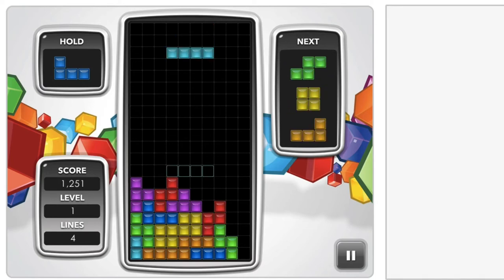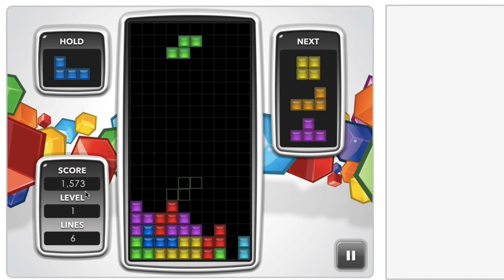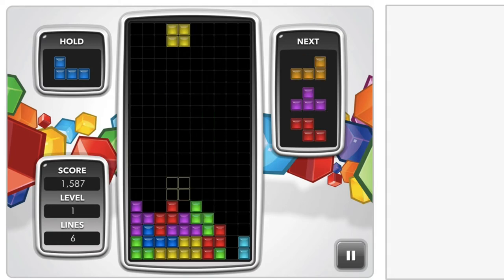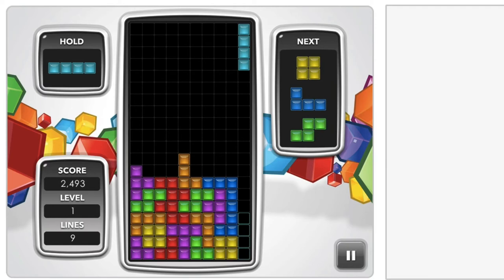When you get rid of one or two lines for example, your score is less. As you can see here, you only have like 300 points for two lines whereas you get more than like a thousand for four lines at a time. As you can see on the left panel you have the score, the level, and the number of lines.